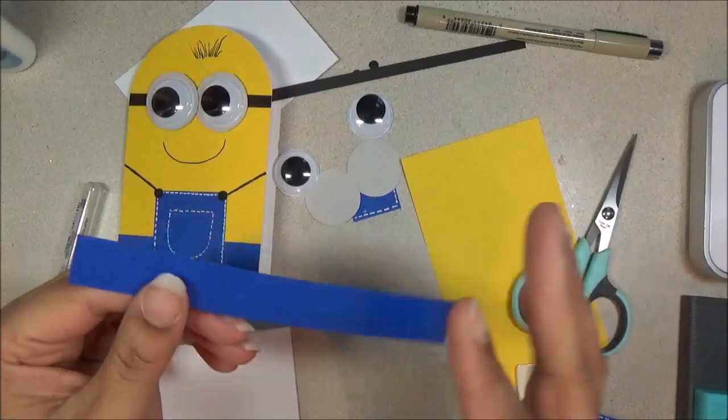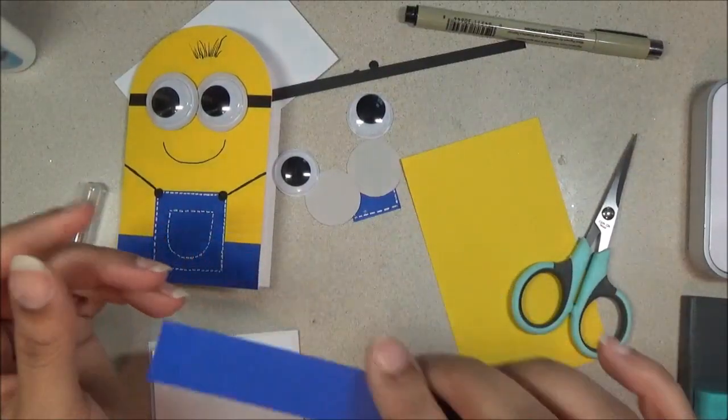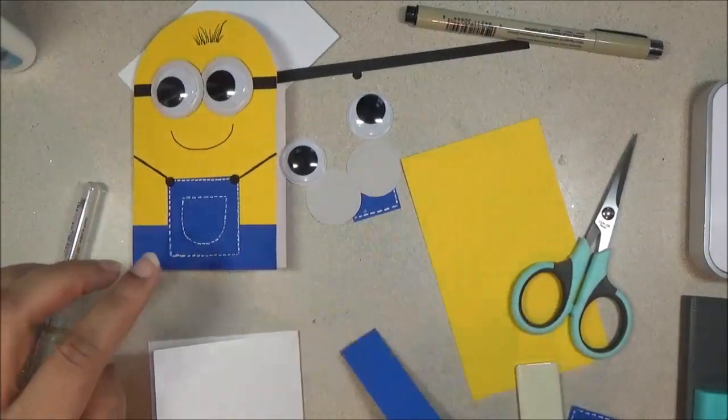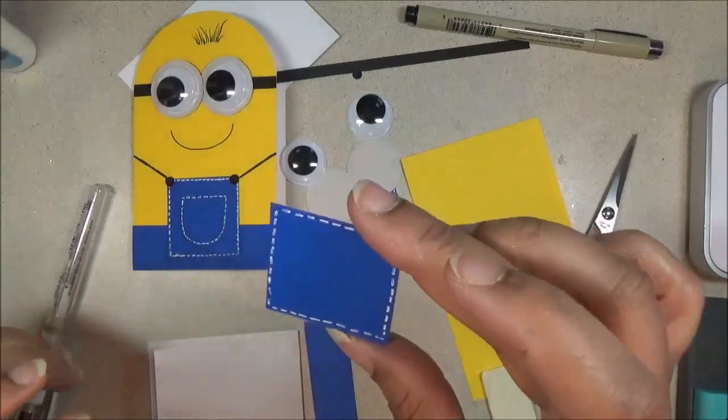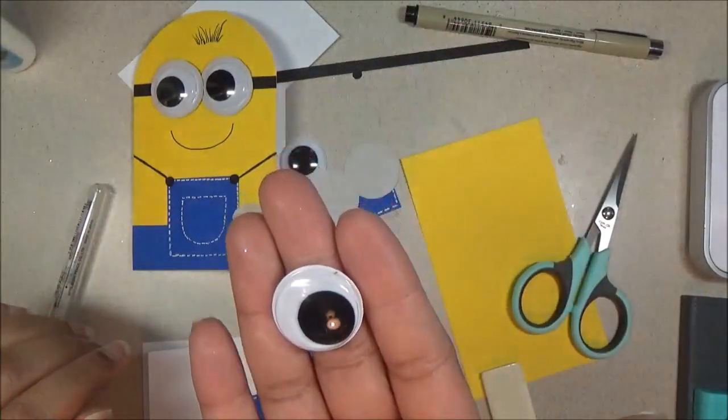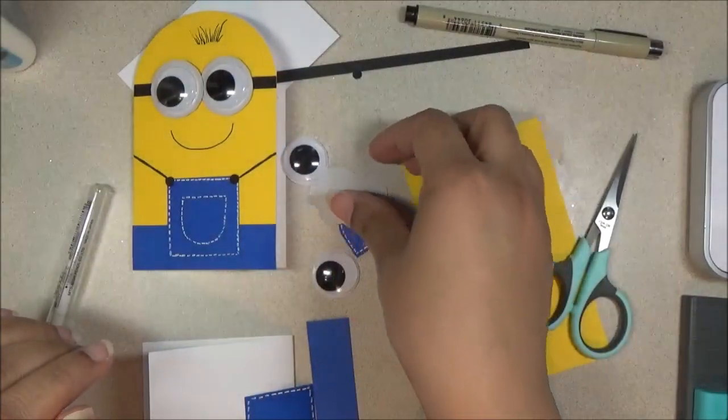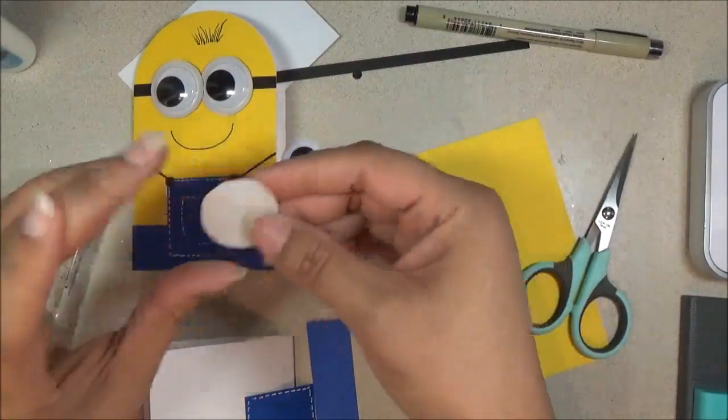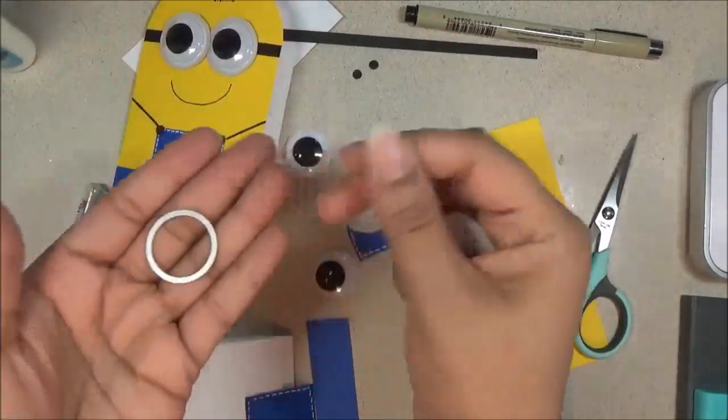And what you'll need also is a strip of blue cardstock cut at, well we're going to cut this off at the three inch mark, but it's going to be cut in width at three-fourths of an inch. This is for his little overalls. You'll need a square cut at one and a half by one and a half. Some little googly eyes, I got these at the Dollar Tree. It's the biggest googly eye in the little variety pack of googly eyes.